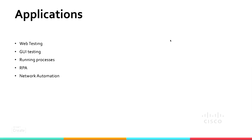Now that we know it has a lot to offer, let's understand what applications industries have been using it for. The spectrum of application has been huge — web development, GUI testing, system testing, running processes, operating system related stuff, robotic process automation, and finally network automation, which is what we want to talk about today.